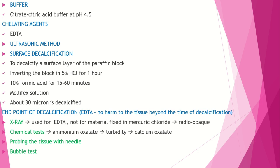EDTA is an exception because it causes minimal tissue damage and preserves staining quality. The methods used for determining the end point of decalcification are: x-ray, chemical test, probing the tissue with a needle, and the bubble test — four methods in total. X-ray method is used for EDTA decalcification.